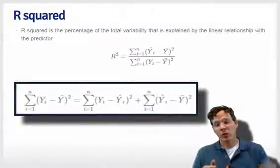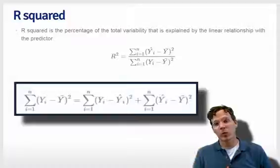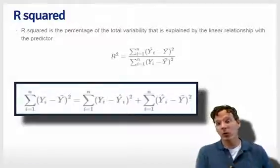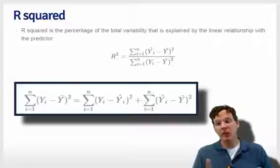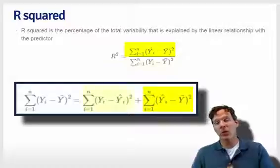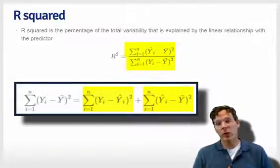Because the residual variation and the regression model variation add up to the total variation, we can define a quantity that represents the percentage of the total variation that's represented by the model. Simply take the regression variation and divide it by the total variation. That quantity is called R-squared.